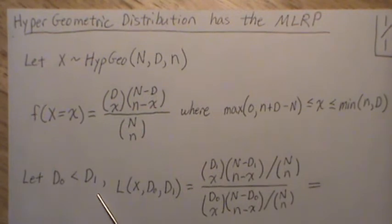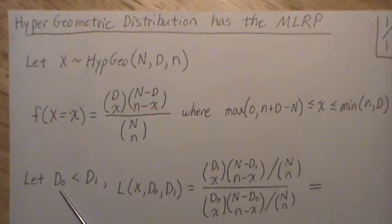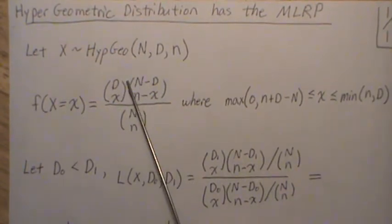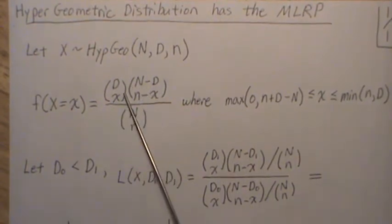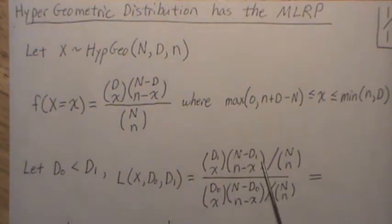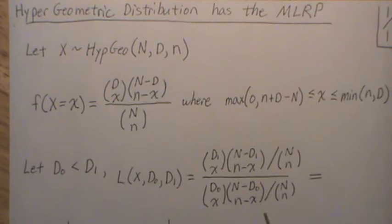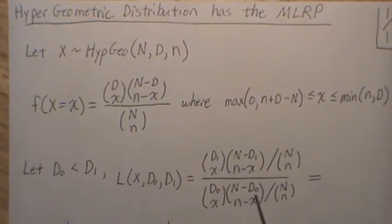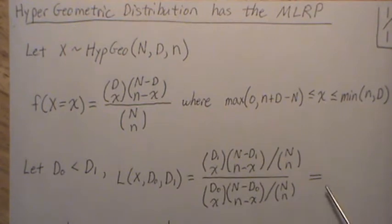Now let's let D1 be bigger than D0 and look at the likelihood ratio. What it says is we take this probability mass function and put it in the numerator, but we use D1, and in the denominator we use this probability mass function but we use D0.